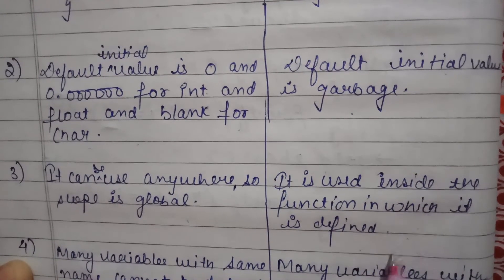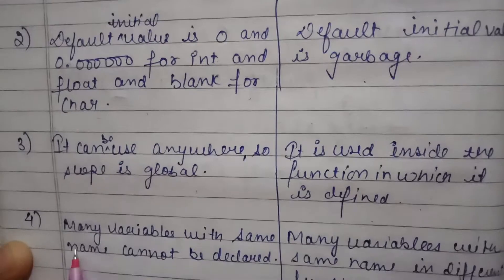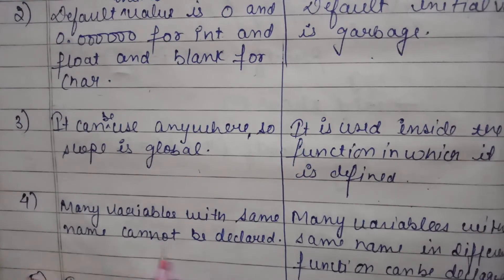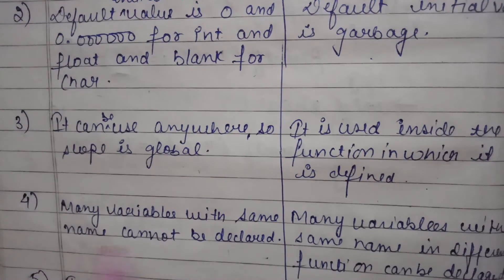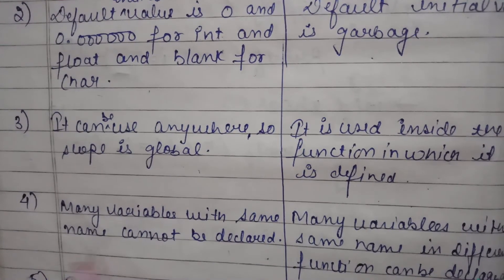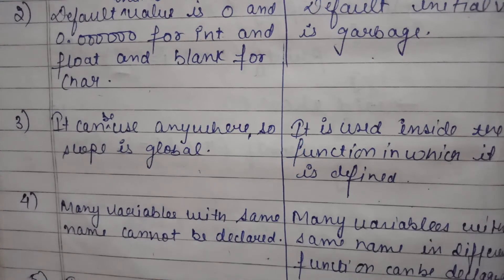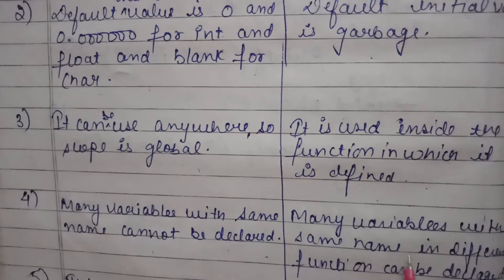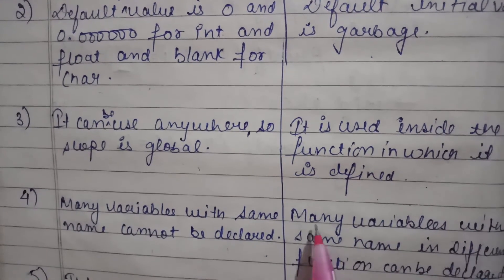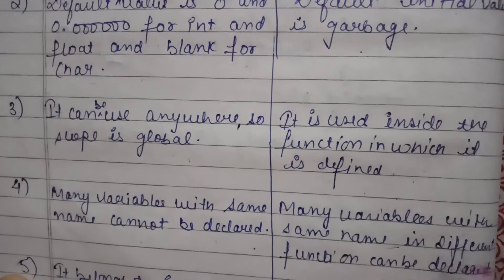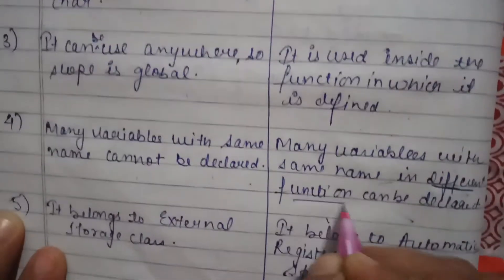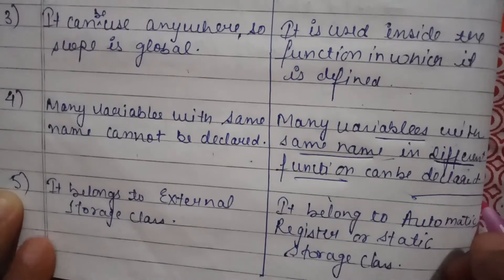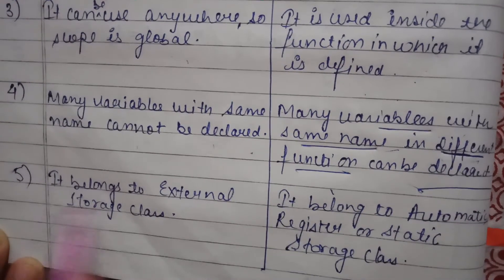The fourth difference is that many variables with the same name cannot be declared globally — if i equals 5 globally, you cannot reuse that name. But local variables with the same name can be used in different functions; different functions can have variables with the same name.